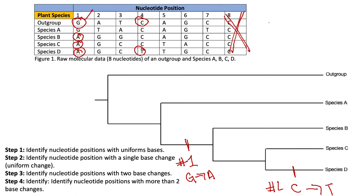Column five has A, A, A, T, T. This is also a uniform change — all As changed to T, and that change was present in all species to come after. Species C and D are both affected. So we plot this change at the common ancestor of C and D: at position number five, going from A to T.